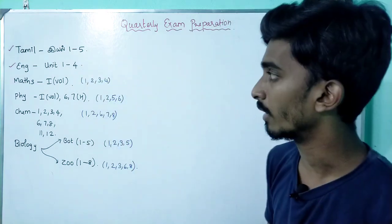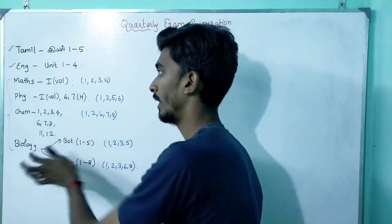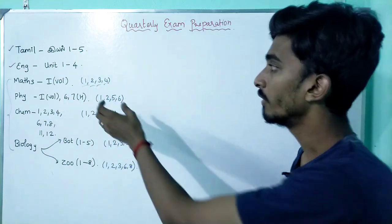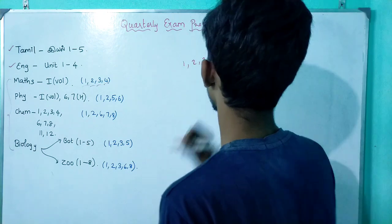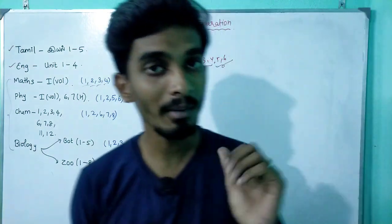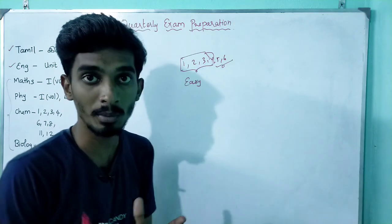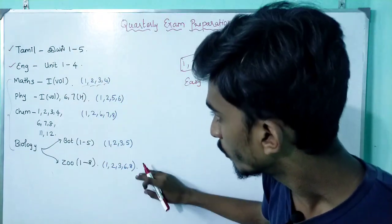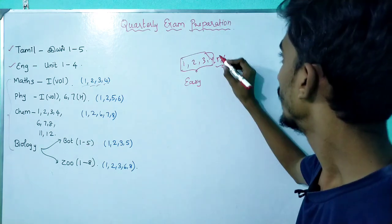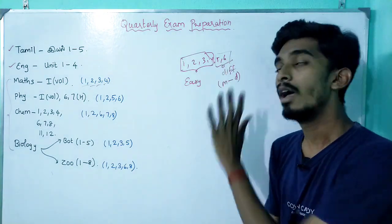In the next week, we will address the subjects: Maths, Physics, Chemistry, and Biology. For Maths, the first volume covers chapters 1 to 6. Chapters 1 to 4 are easier, while chapters 5 and 6 are moderate to difficult.